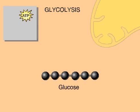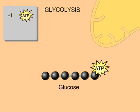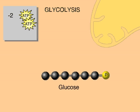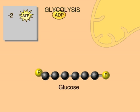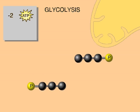In the energy investment phase, some ATP energy is used to start the process of glucose oxidation. By the end of this phase, a six-carbon molecule, glucose, has been split into two molecules containing three carbons each. The three-carbon molecules now enter the energy payoff phase.